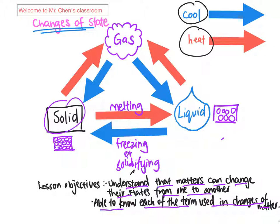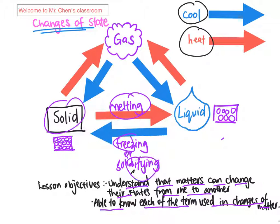In order for solid to turn into liquid, it has to melt, which means you need to give a lot of energy to break the particles inside apart from each other. And you can go the other way, which is liquid turning into solid by freezing or solidifying.